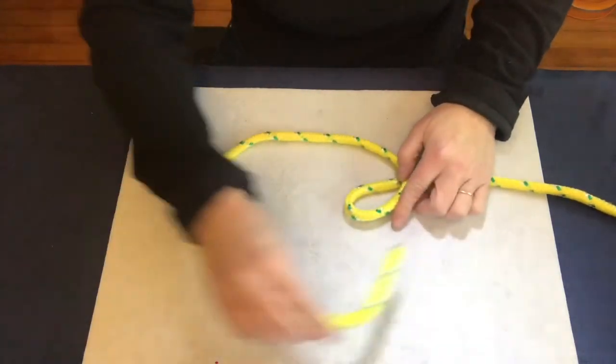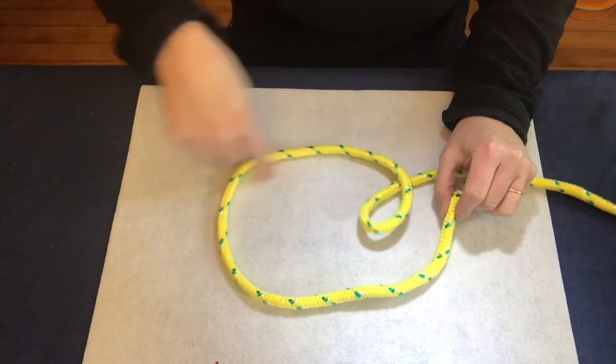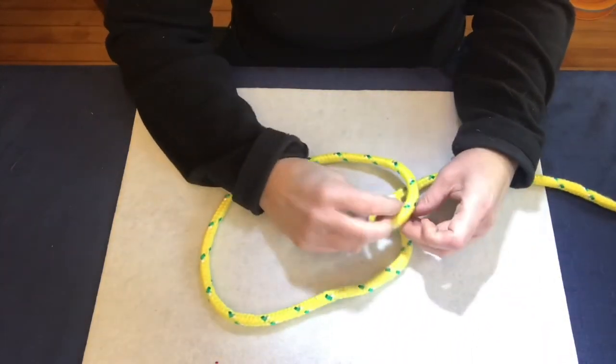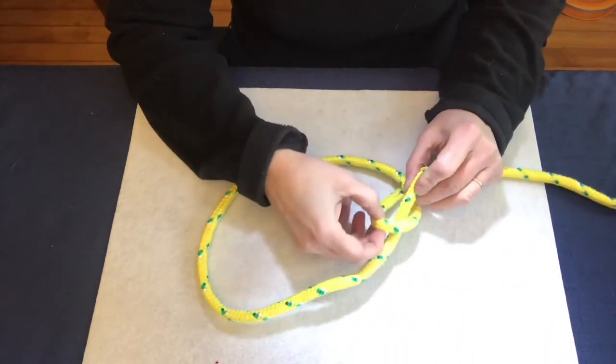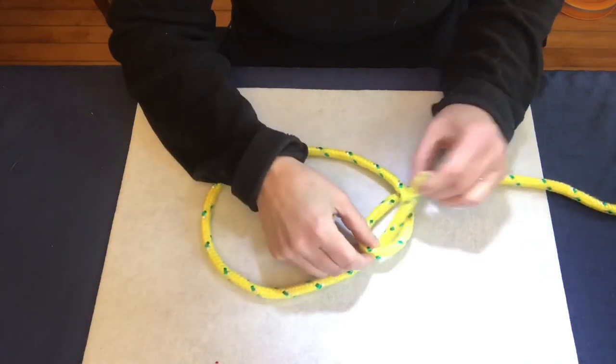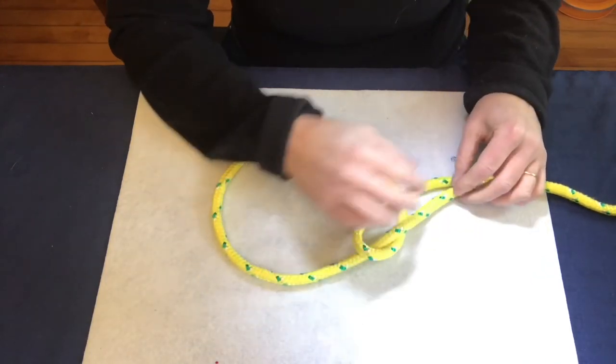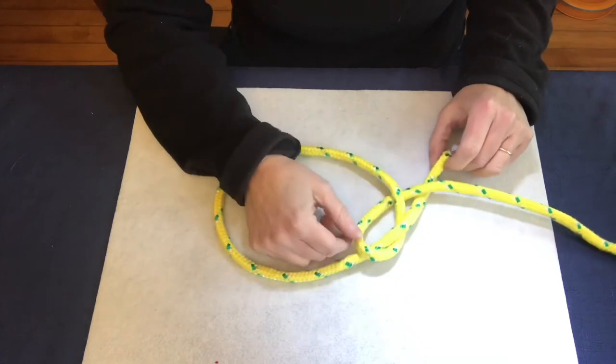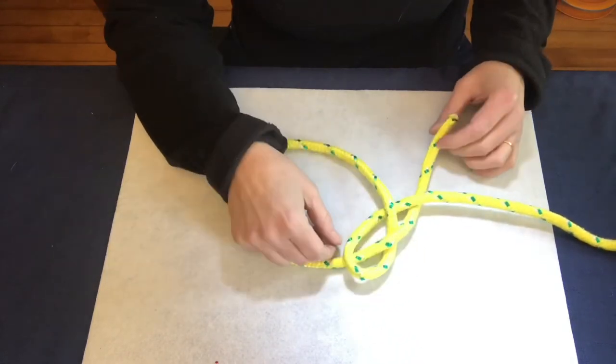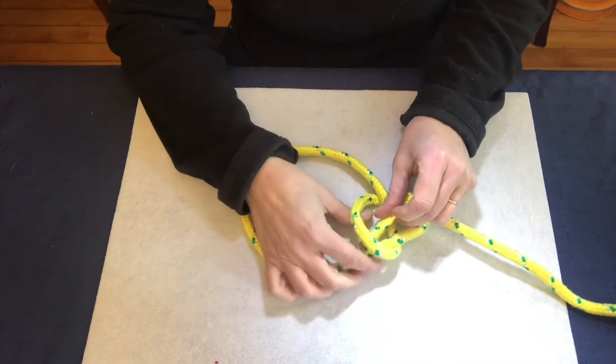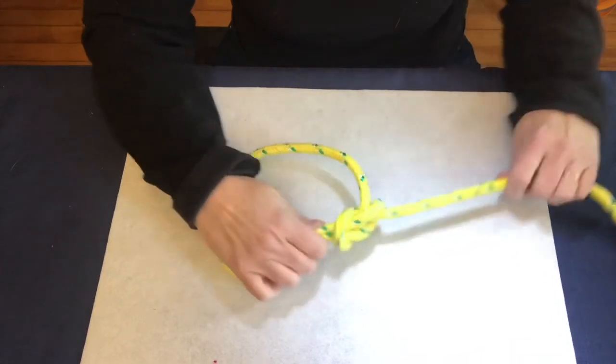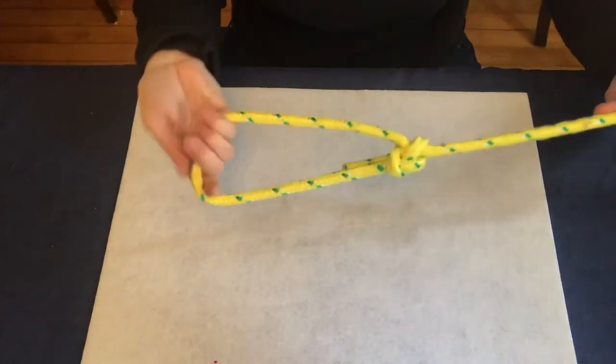We're going to go ahead and make a bigger loop here, and with that running end we're going to go through the middle of that hole. Some people like to do the rhyme where it's a bunny and you're going through the hole, around the tree, and back through the hole again. You grab these two and you pull, and now you have your bowline.